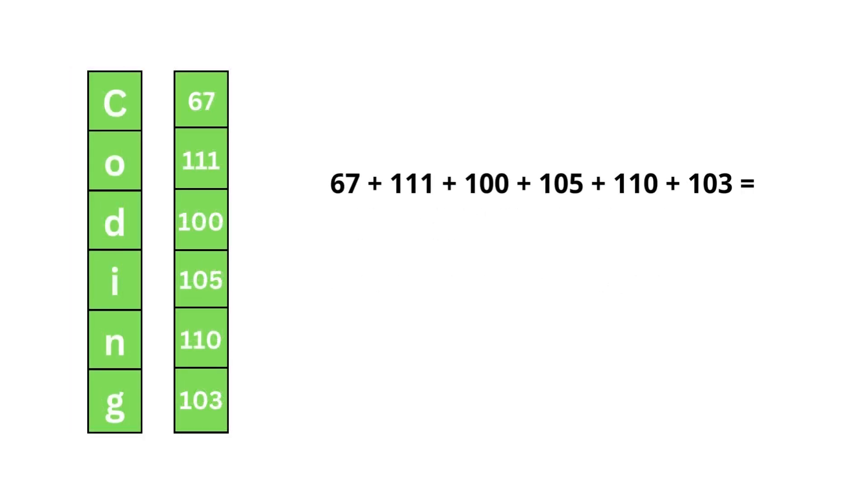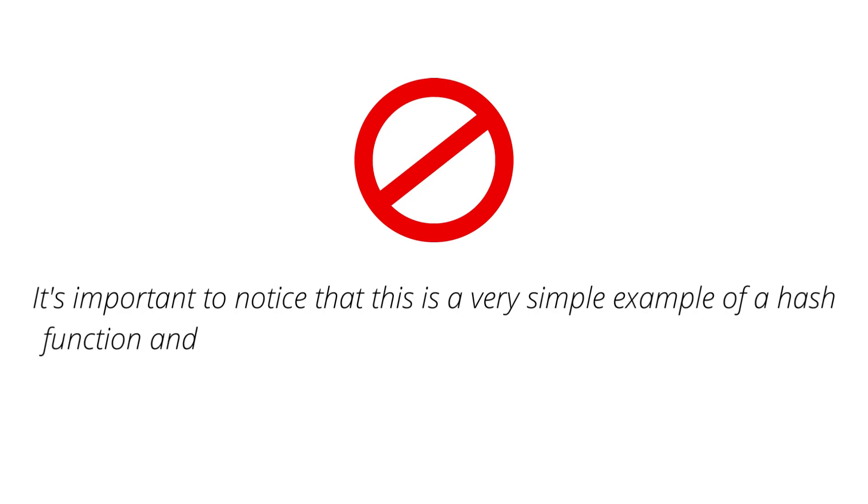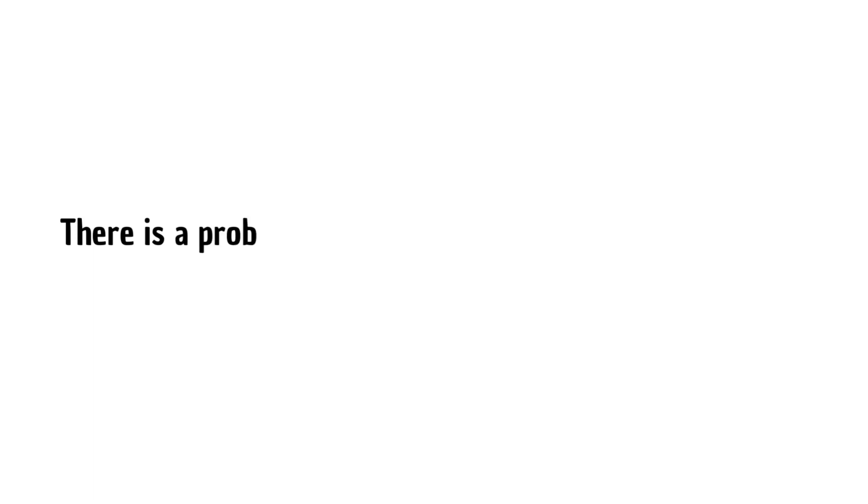As you can see using our hash function, the hash value for coding is 596. This is a very simple example of a hash function, and it's not suitable for security-sensitive applications or any practical applications, but it is a good example of understanding how a hash function works.